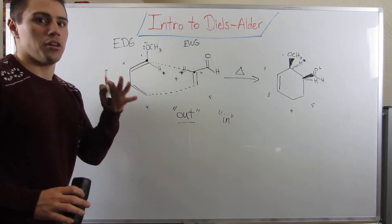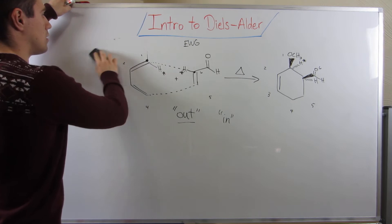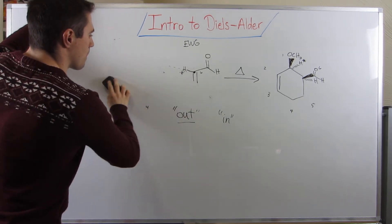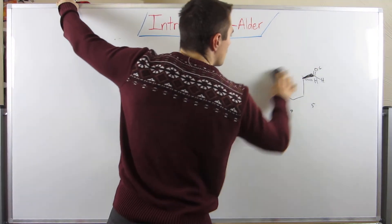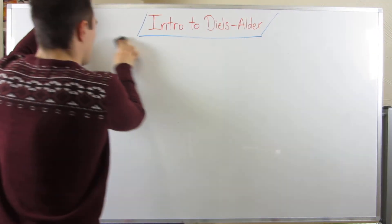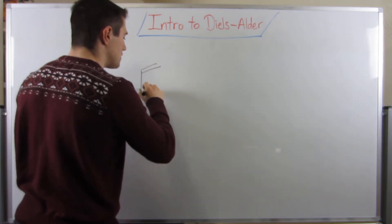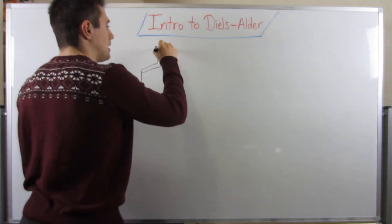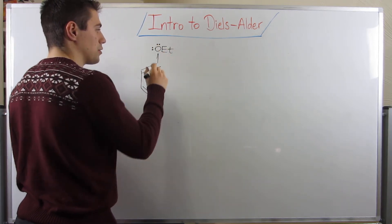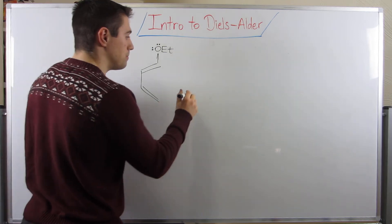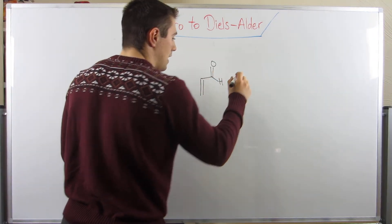Let me do another quick example, and then I'll show you why we were drawing resonance in the first place. Let's say I give you this diene with an ethoxy group on it - still an electron-donating group, so the negative charge will end up on the terminal carbon. I'll use the same dienophile with an aldehyde.